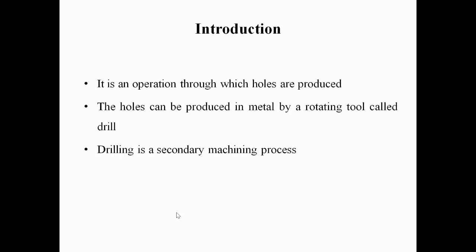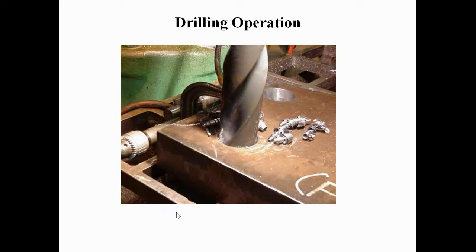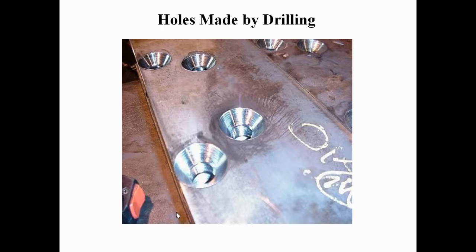Drilling is a secondary working process. The machine used for drilling is known as a drilling machine. We can see here in this picture how the drilling operation is performed by using a tool called a drill. We can see various sizes of holes made by the drill on the workpiece.